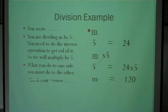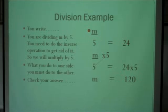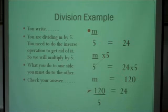To check our answer, we use substitution: put 120 in m's place and work the original problem. 120 divided by 5 is 24 — and we are correct.